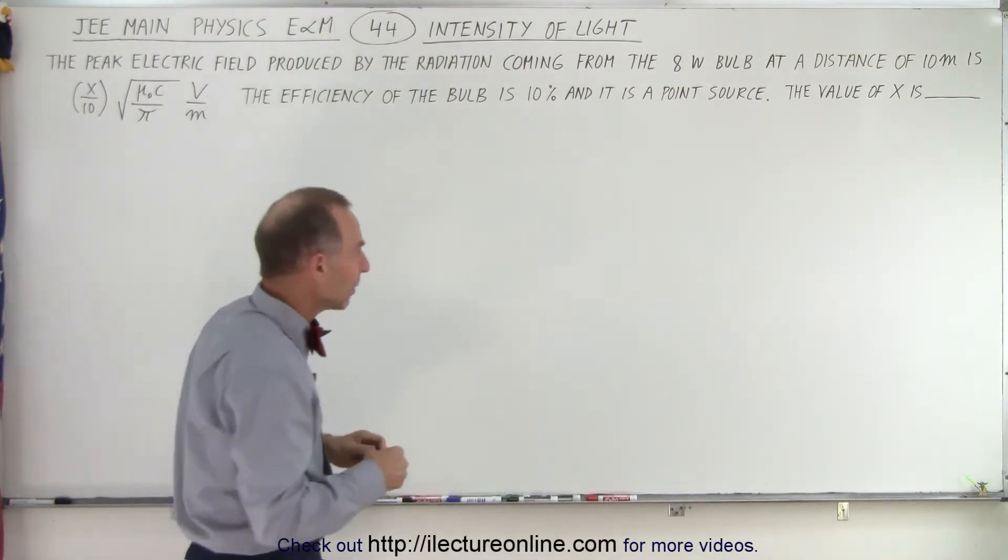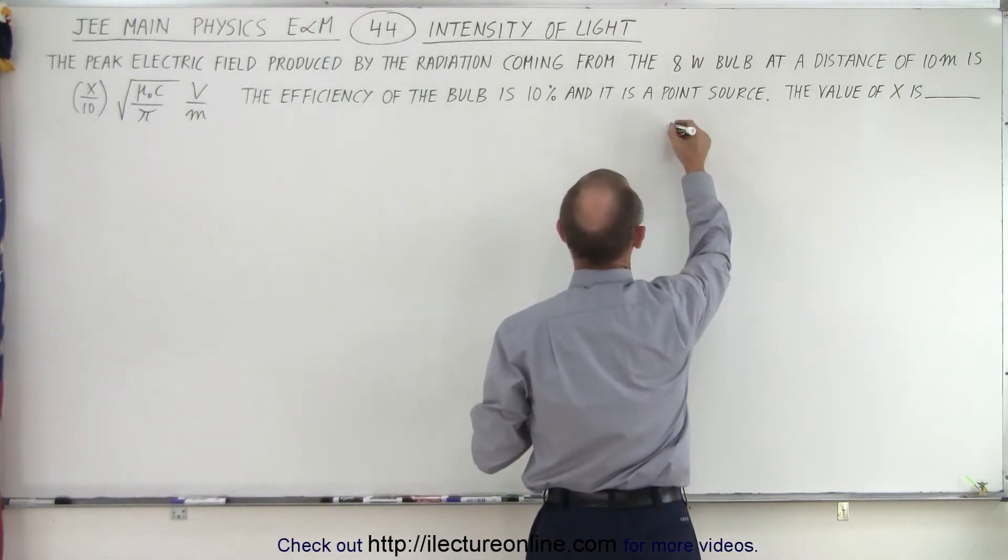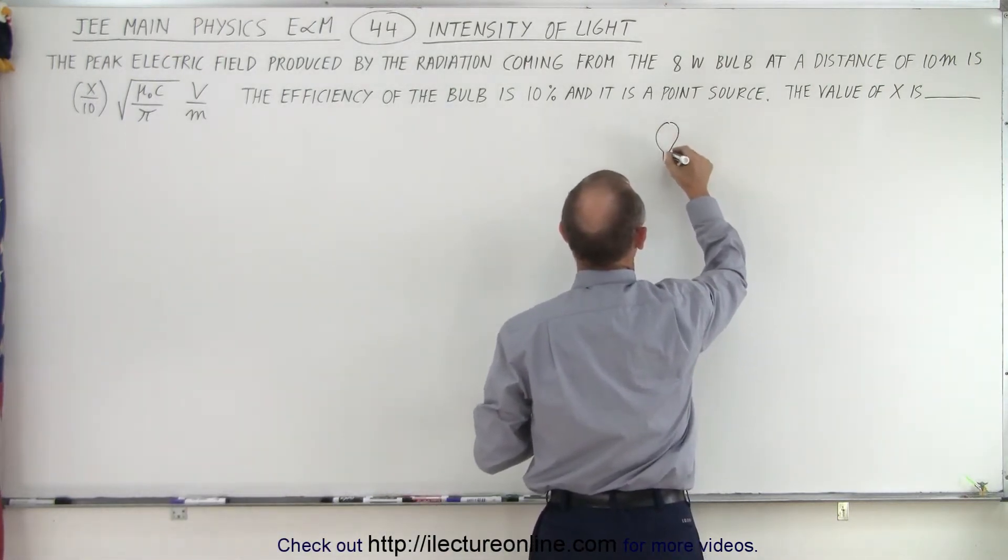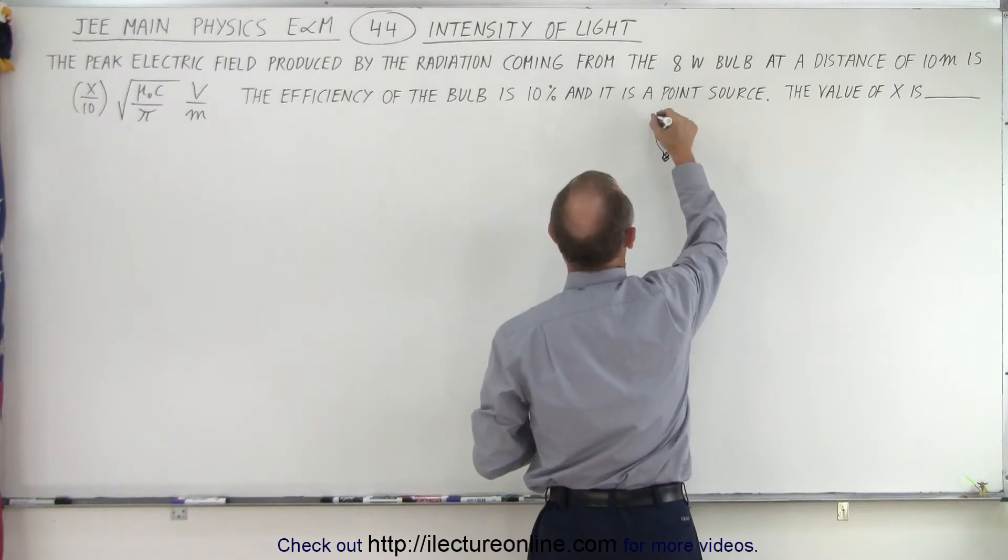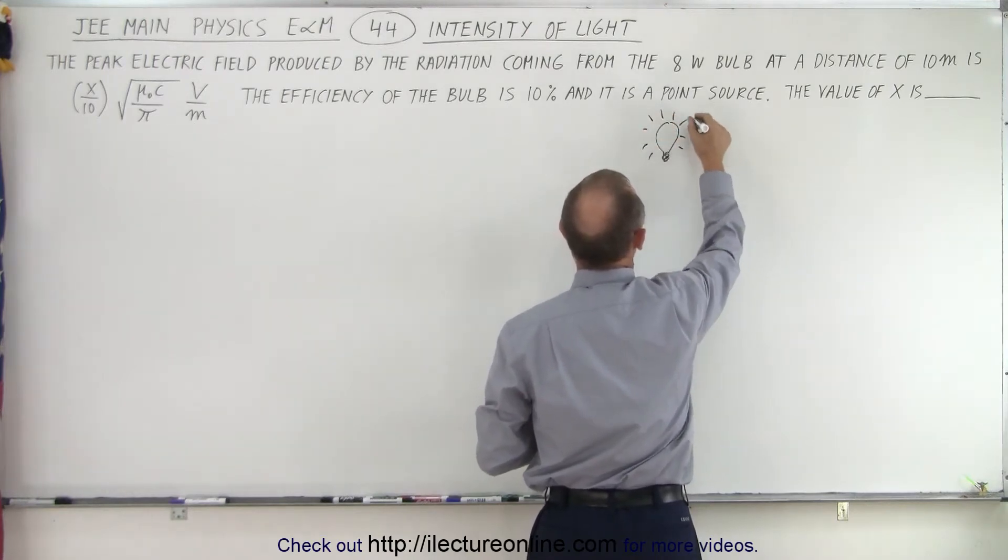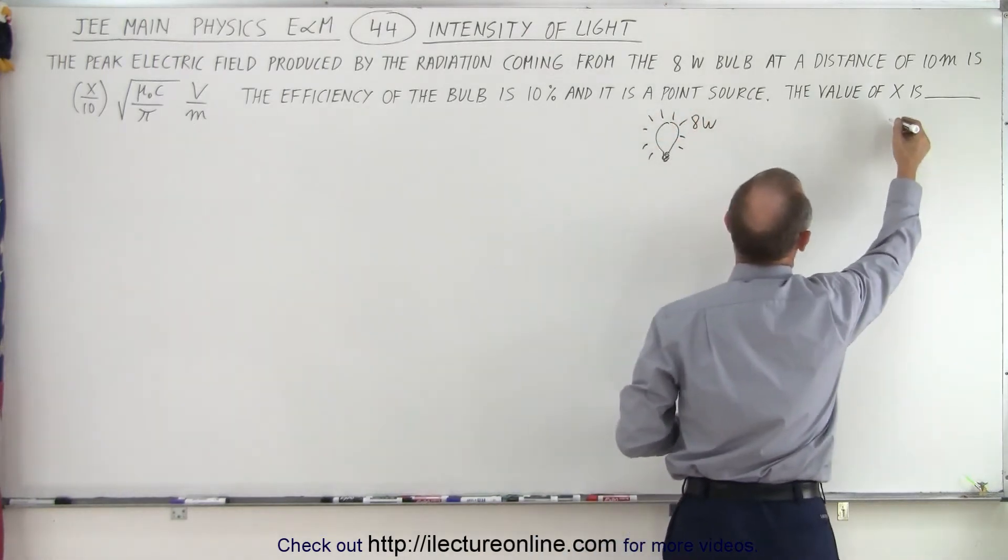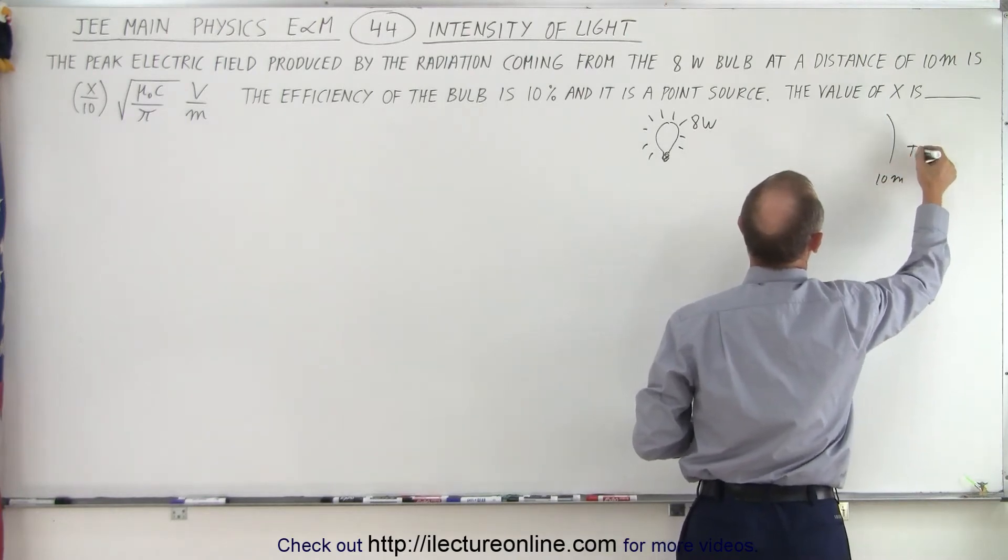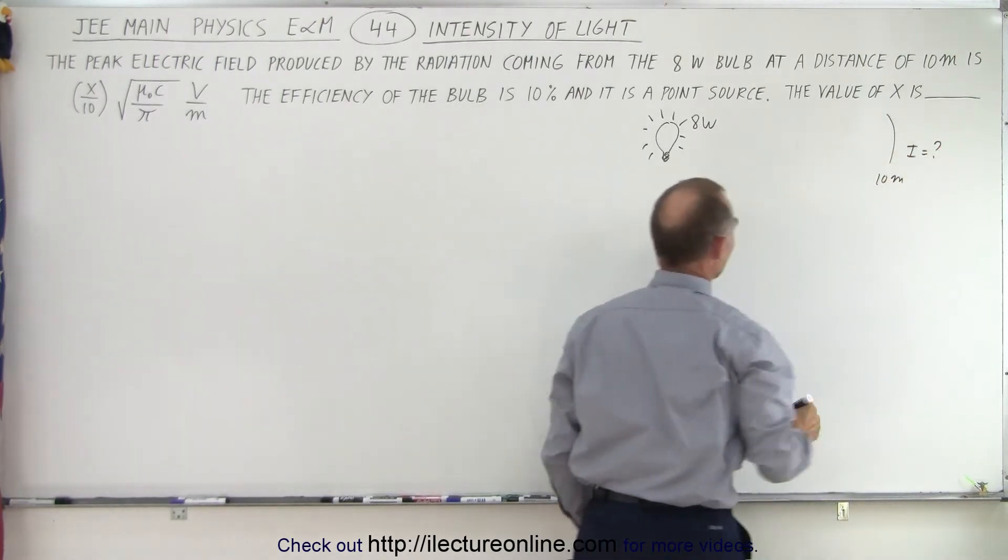And first we'll make a little diagram so you can see what's going on. We have a little light bulb like this, and the light bulb is 8 watts. And we're about 10 meters away and we want to know the intensity at that location.